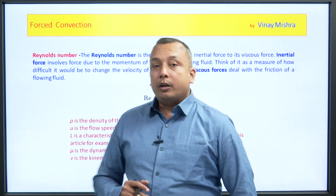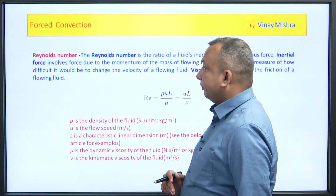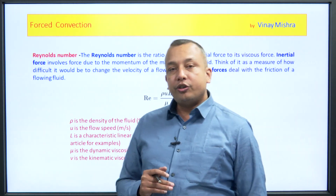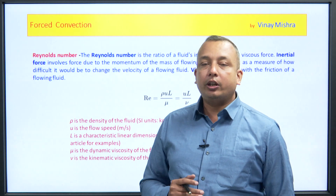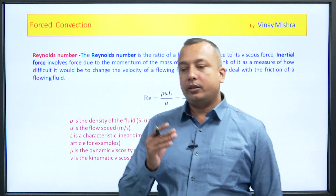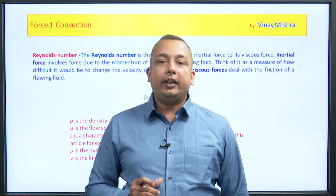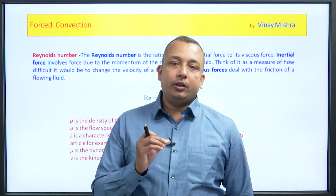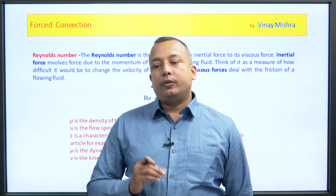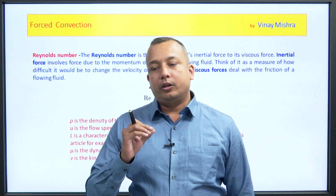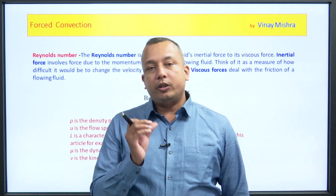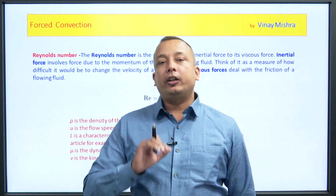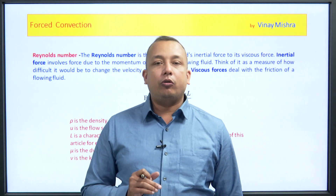If we talk about Reynolds number, basically it is a dimensionless number — it is a mathematical quantity by which the flow is being identified as to whether it is laminar or turbulent.